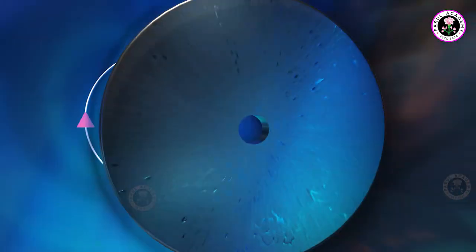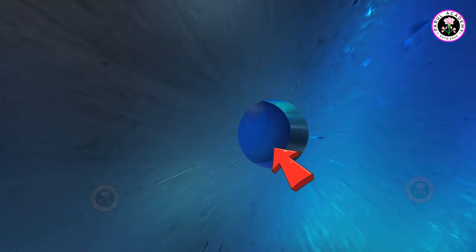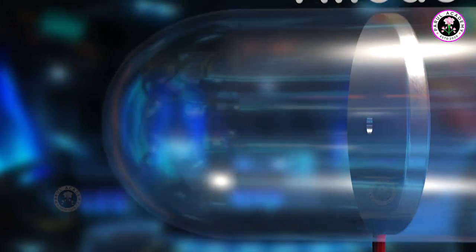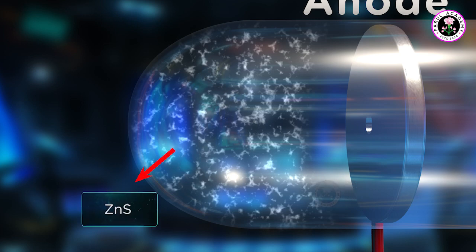Also, a small hole is created on the anode plate and a layer of fluorescent zinc sulphide is done on the glass behind the anode.